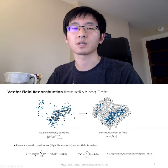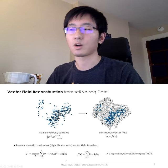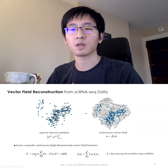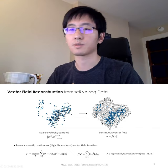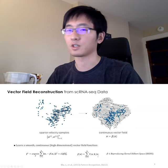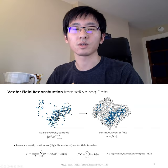We use an algorithm called sparse VFC for vector field function learning. Basically, it approximates the function in the reproducing kernel Hilbert space as the sum of Gaussian kernels so that we can minimize the loss function by changing the combination coefficient c. What we get in the end is a smooth, continuous, and high dimensional vector field function.